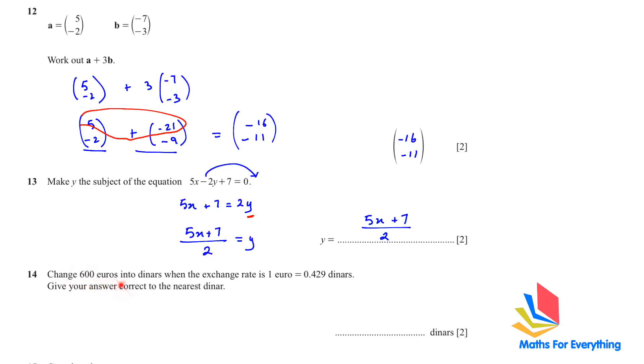Next question, change 600 euros into dinars when the exchange rate is 1 euro is equal to 0.429 dinars. Give your answer correct to the nearest dinar. For a currency conversion question, always write the currency on the top. 1 euro is equal to 0.429 dinars. Therefore, 600 euros is equal to how many dinars? We cross multiply. 1 multiplied by X is X. And 0.429 multiplied by 600 is 257.4. Read the question correctly. They want to the correct nearest dinar. So we will not write after the decimal. We will round it to the whole number, which is 257 dinar.